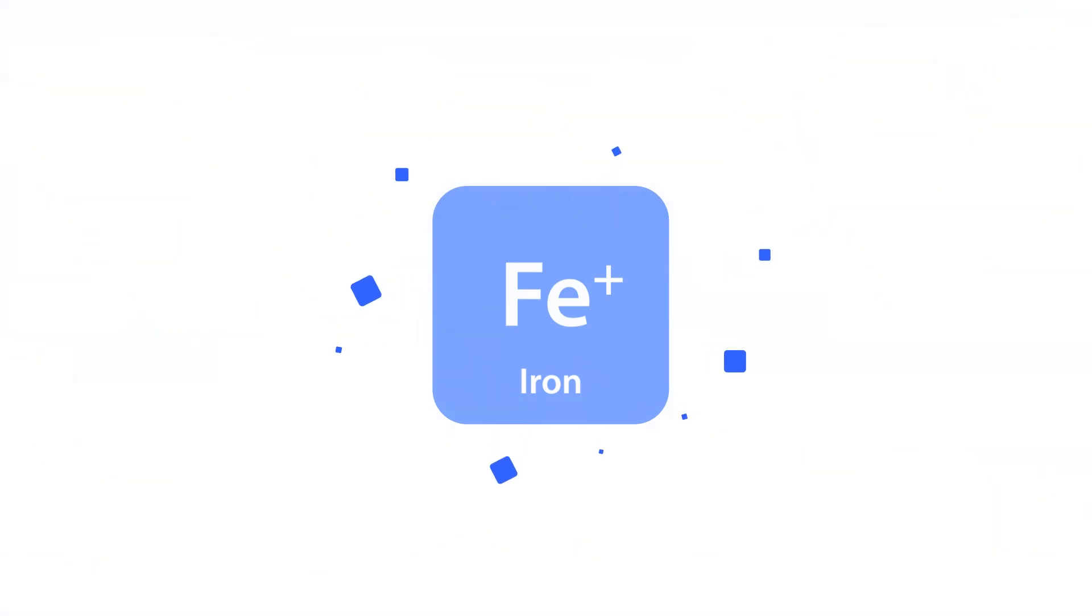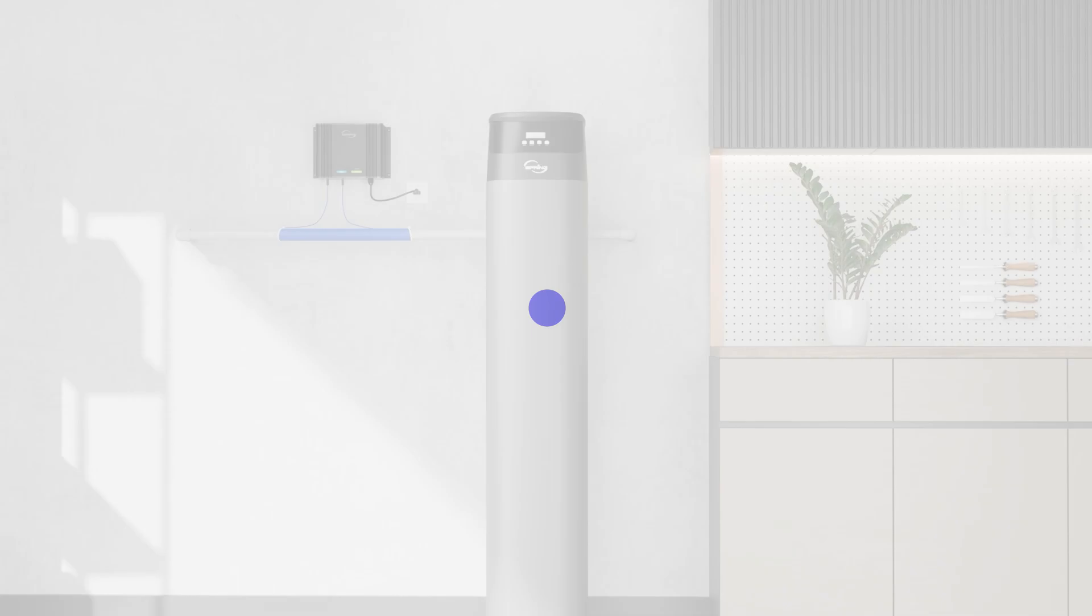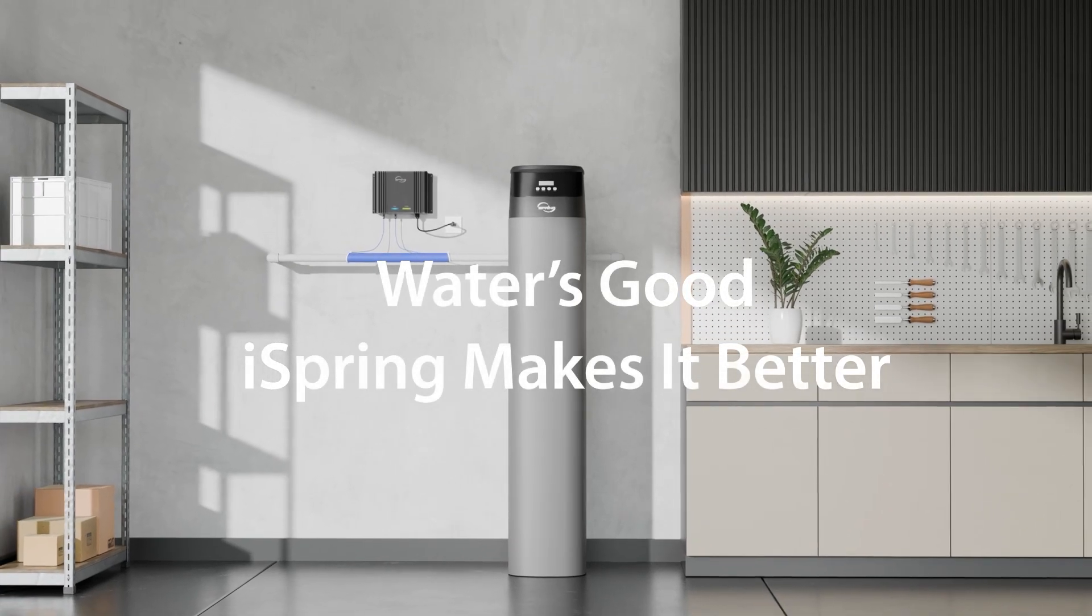High iron content in your water will also reduce the effectiveness of the EDV2. For source water with iron levels over 0.3 ppm, using an iron removal filter before the EDV2 is recommended.